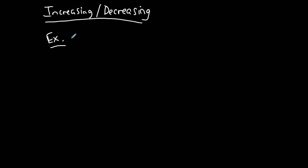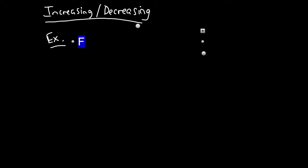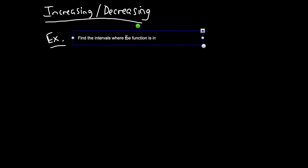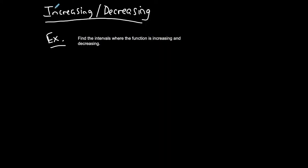For example, find the intervals where the function is increasing and decreasing. Let's call this part A. F of x is equal to x squared minus 3x plus 4.